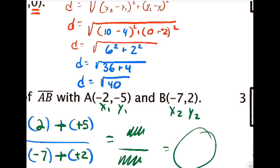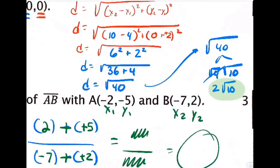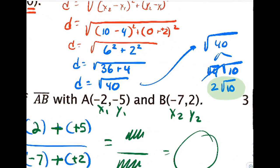Radical 40 breaks down into 4 times 10. Radical 4 is 2, and radical 10 stays the same, giving 2 radical 10. That's the correction to number 2 for tomorrow.